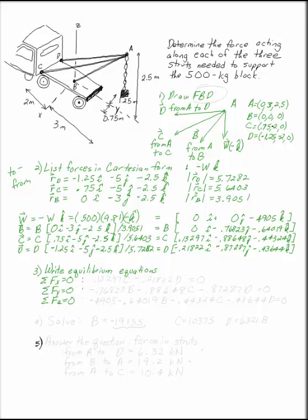So our first column would be 0i from the w vector, 0i from the b vector, 0.13297c from the c vector, and minus 0.21822d from the d vector. And those things have to equal 0.